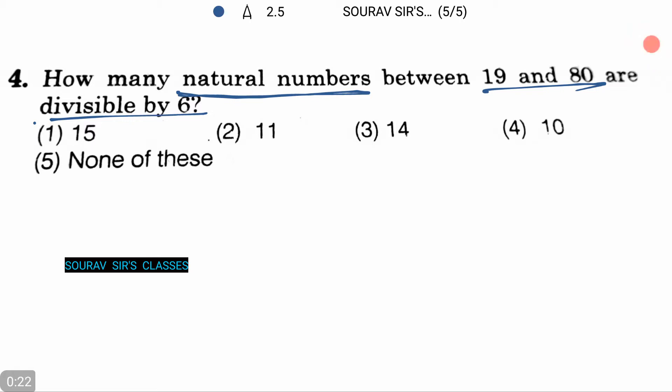The first number between 19 and 80 that is divisible by 6 is 24, then it's 30. The next number is 36, dot dot dot. The last term between 19 and 80 that is divisible by 6 is 78.